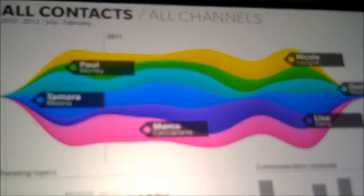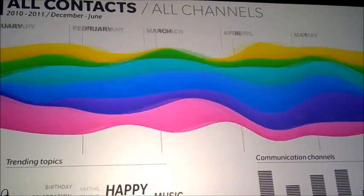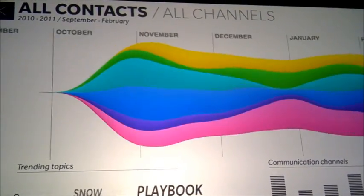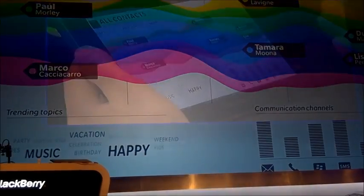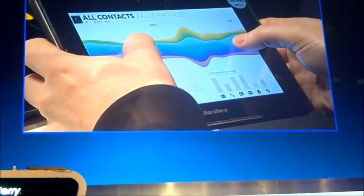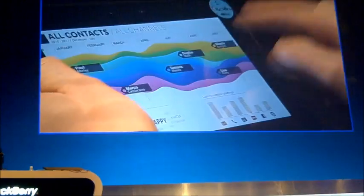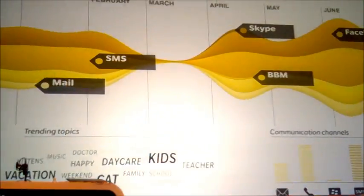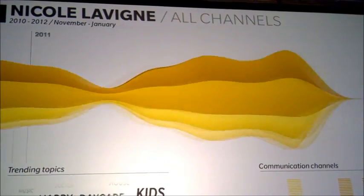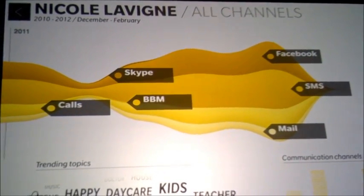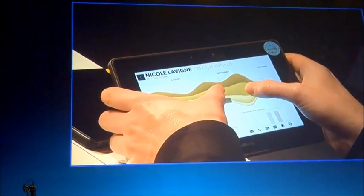You can see different contacts, a tag cloud with trending topics, and quickly browse through your inbox to see what you were talking about with different people and what communication channels you used. You can zoom in to see how communication is working, choose a particular person — in this case Nicole — and see what you were talking about. It's a fully touchable user interface with a lot of APIs.